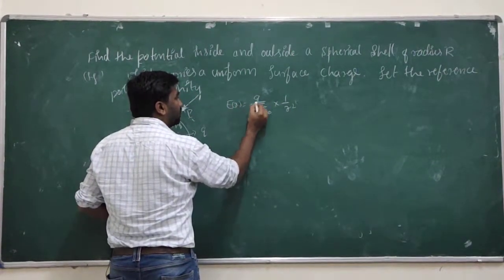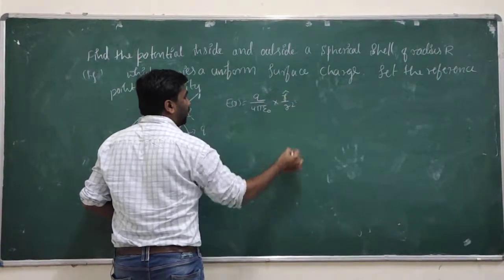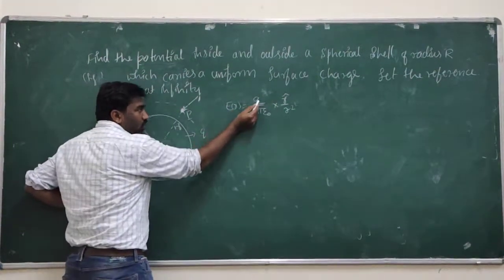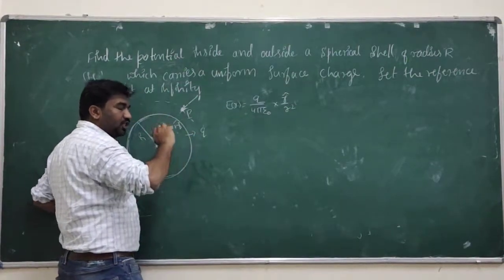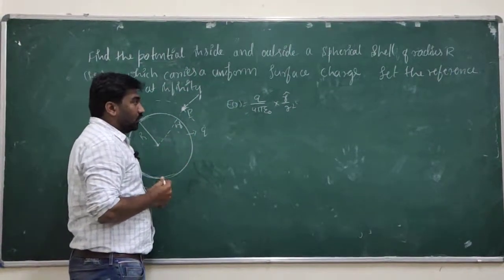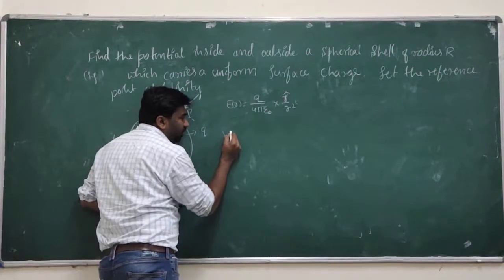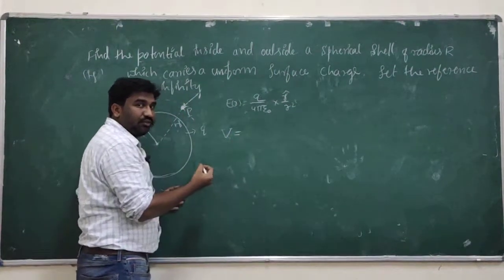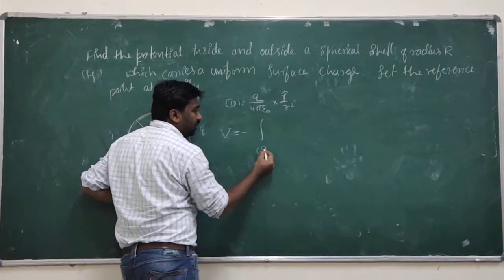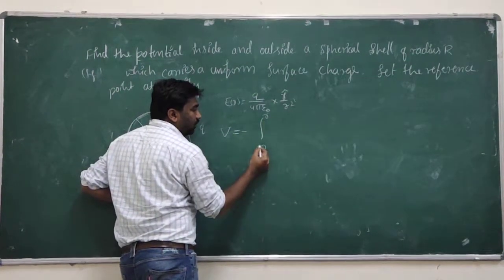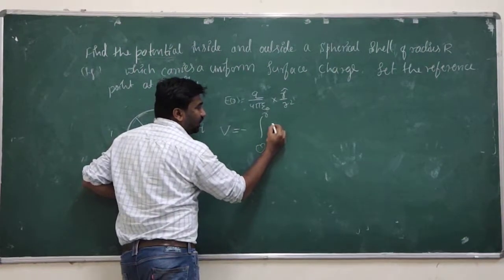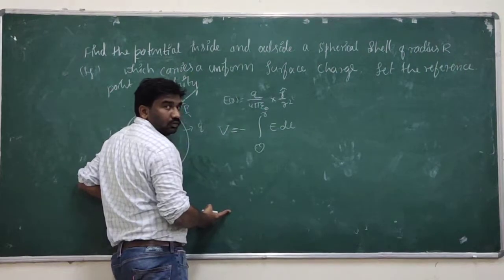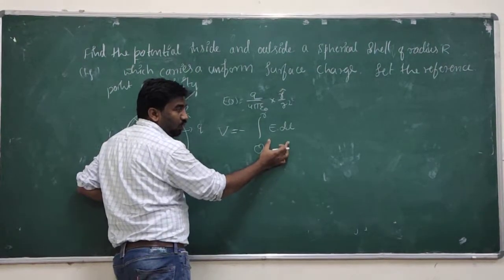For a position along the r direction, the position unit vector is r-cap. If q is our total charge of the spherical shell, by the definition of potential there will be a relation: the electrostatic potential V is equal to minus of the integral from reference point to given point r of E dot dl, which is also work done.